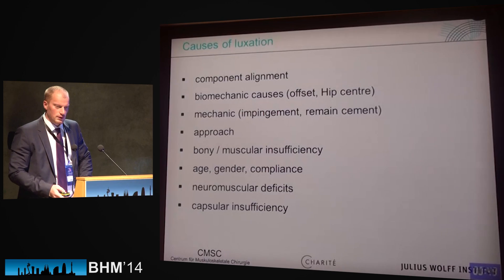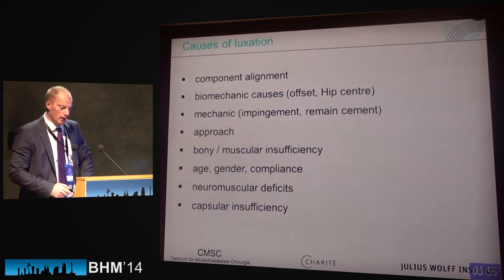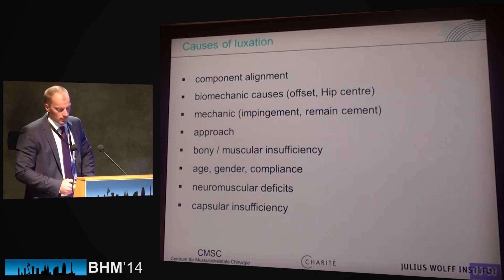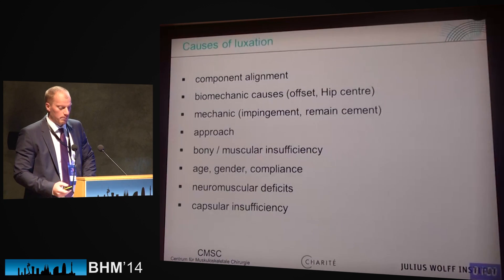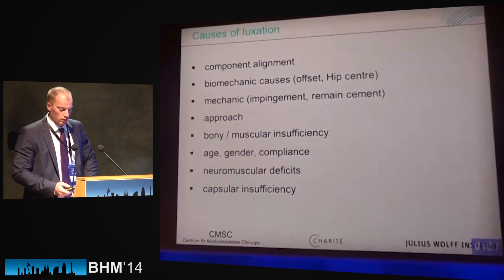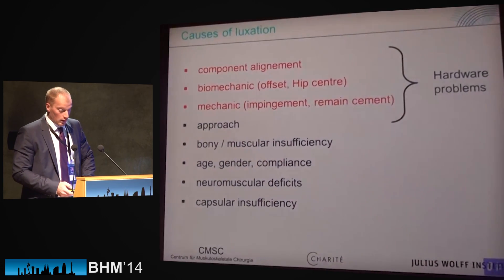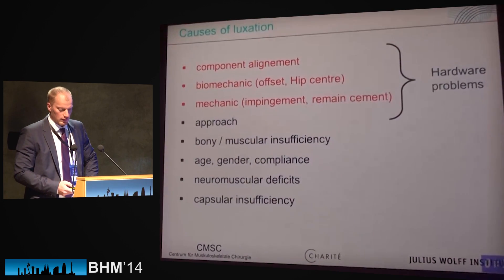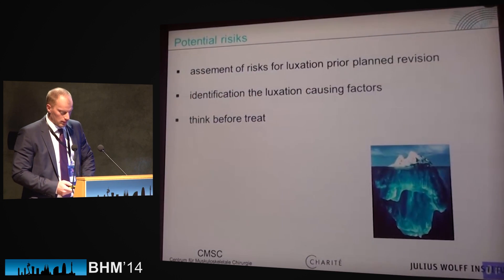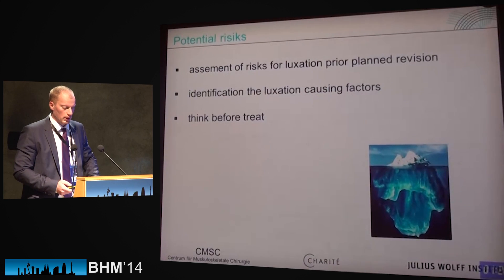What are the causes for dislocation? We find a lot: component alignment problems, biomechanics, impingement, the surgical approach, bony or muscular insufficiency, age, gender, patient compliance, neuromuscular deficits, and capsular insufficiency. The first three I would consider hardware problems; the others are soft tissue or patient-related problems.